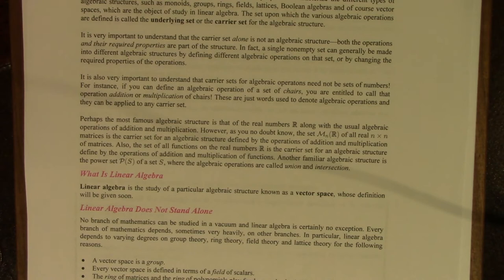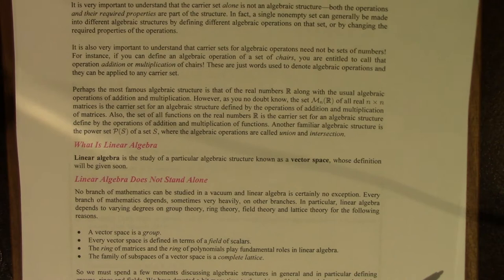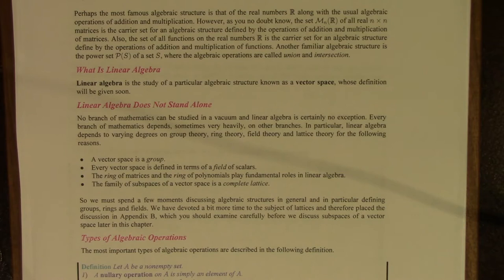Linear algebra is the study of a particular algebraic structure known as a vector space, and we'll give the definition of a vector space fairly soon. No branch of mathematics can be studied in a vacuum, and linear algebra is no exception. Every branch of mathematics depends to one degree or another — sometimes very heavily — on other branches. Linear algebra depends to varying degrees on group theory, ring theory, field theory, and lattice theory.